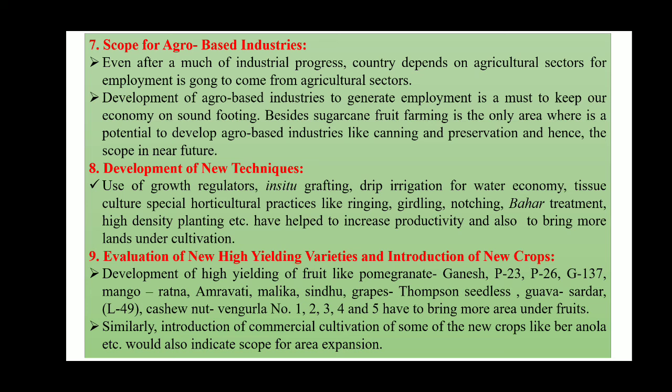Development of new technologies is also creating scope. Previously there was less research in horticulture, but nowadays we have innovative technologies like use of growth regulators, in-situ grafting, drip irrigation for water economy, tissue culture, and special horticultural practices like ringing, girdling, notching, bahar treatments, and high density planting — all creating a lot of scope for fruit crops.